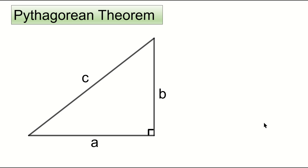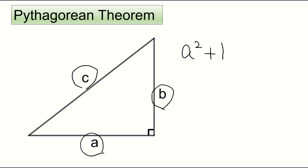First, what is the Pythagorean theorem? This is the formula that shows the relationship between the lengths of the three sides of a right triangle. If the length of the hypotenuse is C and the lengths of the other sides are A and B, then A squared plus B squared equals C squared. This is a very famous formula.